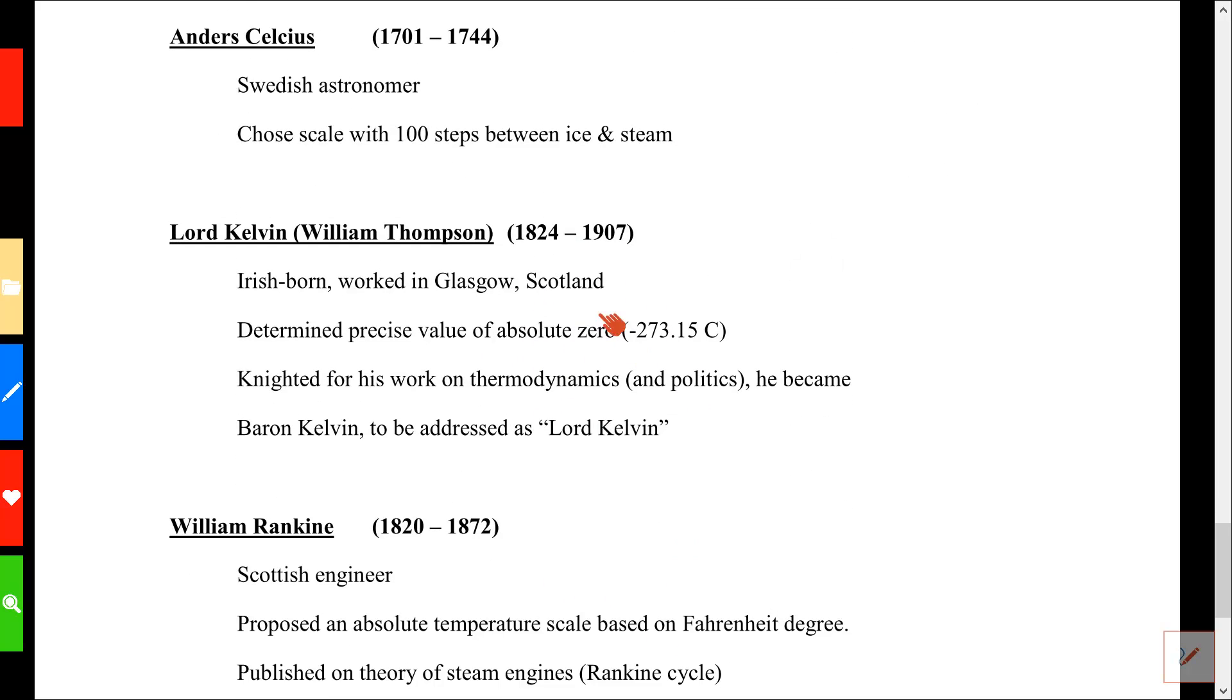The Kelvin scale is named not for a man, but for his title. William Thompson was the man, and he determined the precise value of absolute zero was minus 273.15, and the absolute scale based on the centigrade scale is named for him. His title was Baron Kelvin.